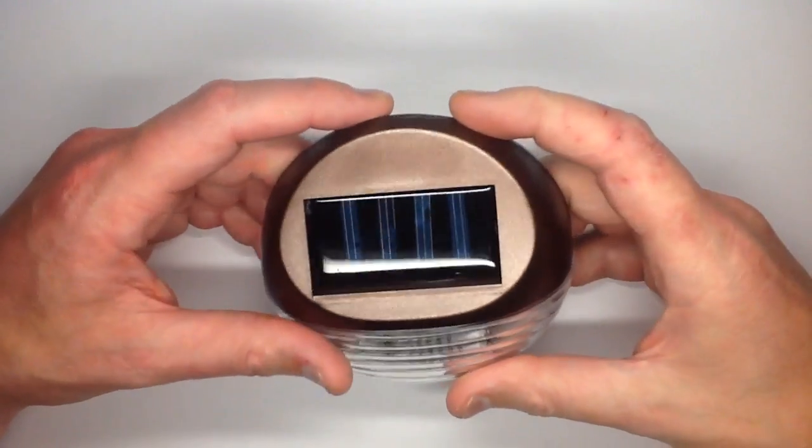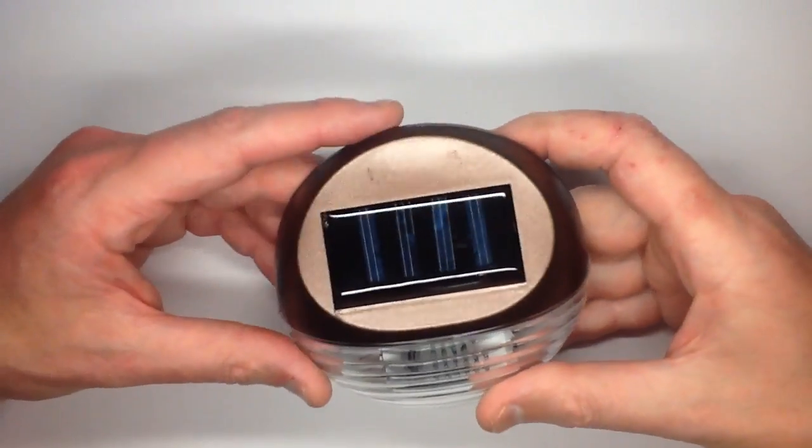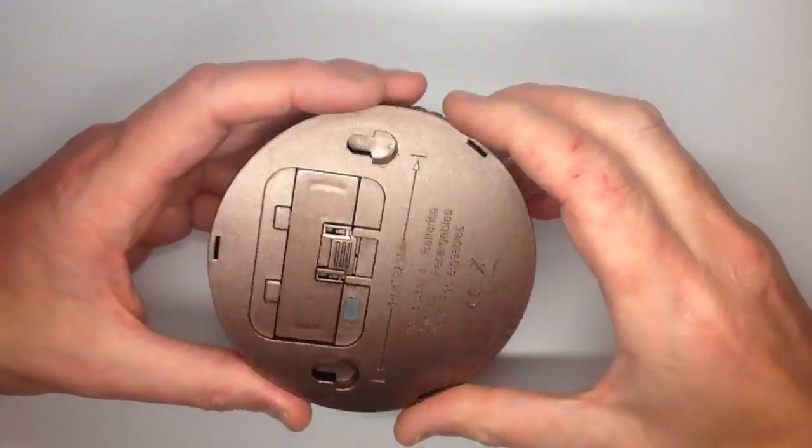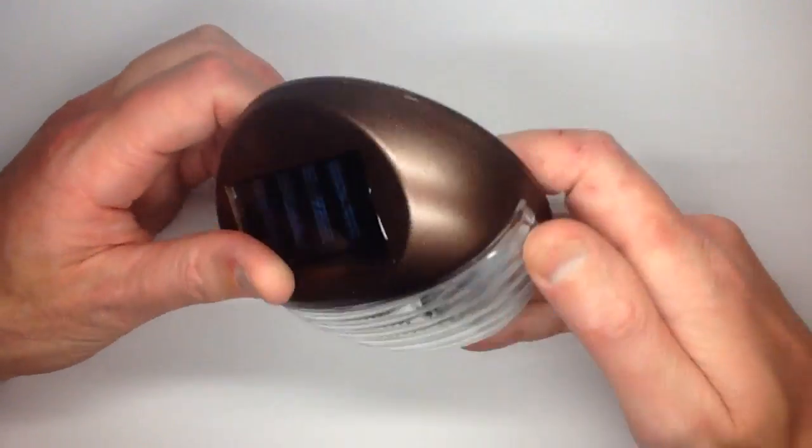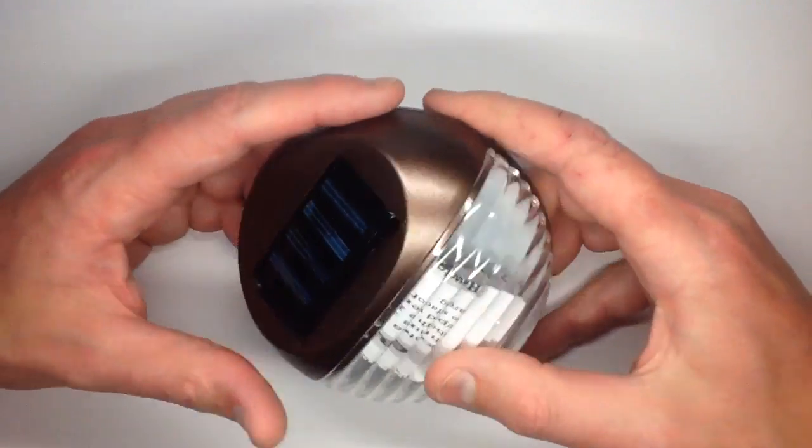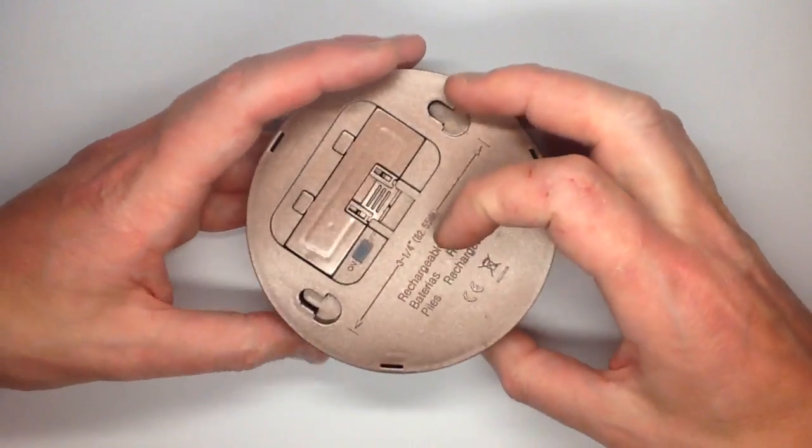A cheap solar-powered fence light. This is just a base, a solar garden light but designed to actually mount onto a wall or fence and provide some downward illumination. So I thought I'd buy one and just take it to bits just because.